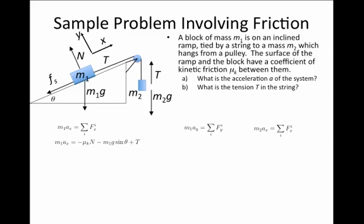And there's the tension T, pointing up the incline. In the y direction, there's a net zero force, because it's not accelerating off of the incline plane. And the two forces are the normal force pointing up, and minus Mg cosine theta pointing down.